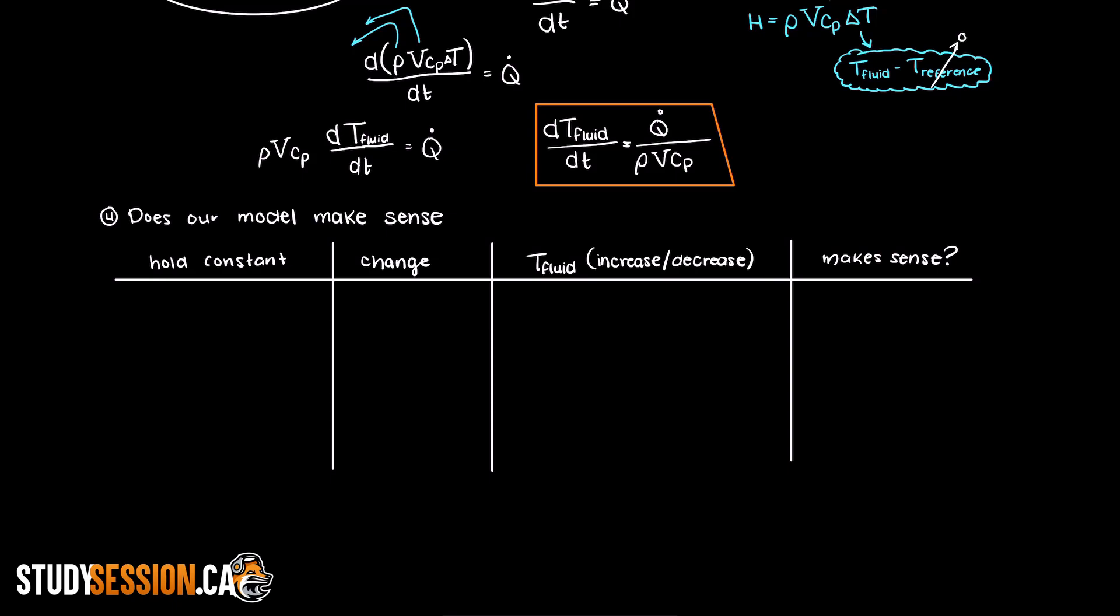we have five independent terms: the temperature, the density, the heat capacity, the volume, and the heat into our system, Q.